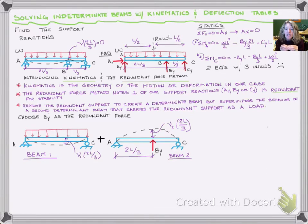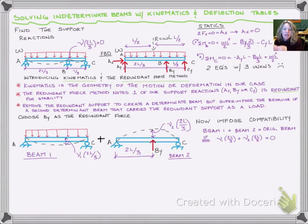Here's how the redundant force method works. We add these together using superposition, but we need to force beam one and beam two to behave like the original beam. The only place we can enforce compatibility is at 2L over 3. So beam one plus beam two equals the original beam if the displacement from beam one at 2L over 3 plus the displacement of beam two at 2L over 3 equals whatever the original beam has.